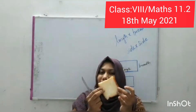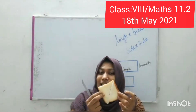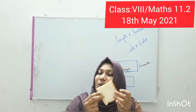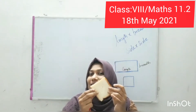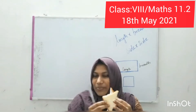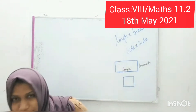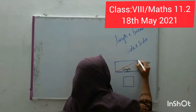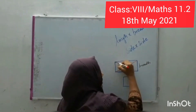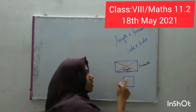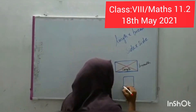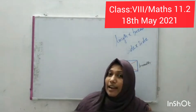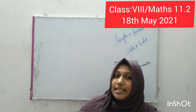When we cut through — the term diagonal means corner to corner. Alternative corners joined together — that line is known as the diagonal. For this rectangle, this line is the diagonal. We can also join these corners. So we get two diagonals. In the case of a square also, we have two diagonals. The corner-to-corner connection is the diagonal.